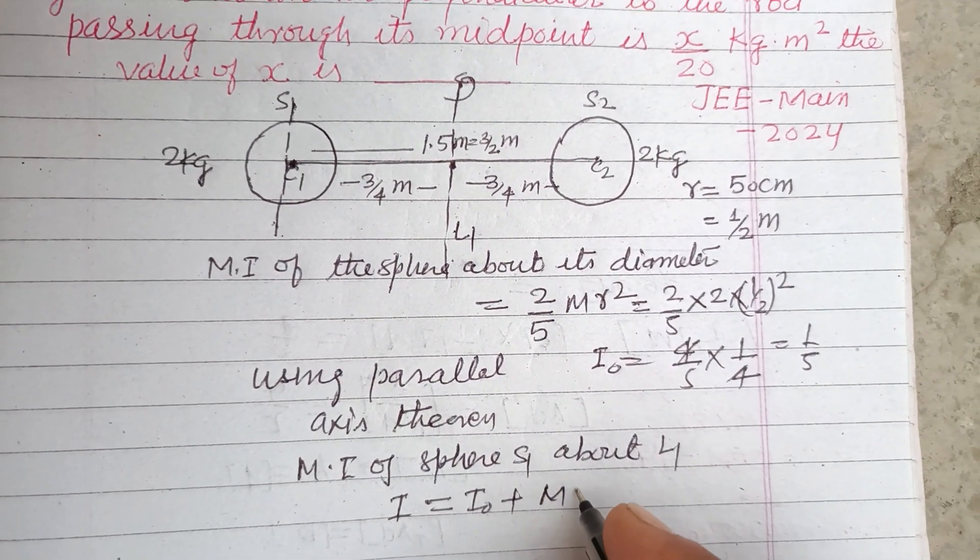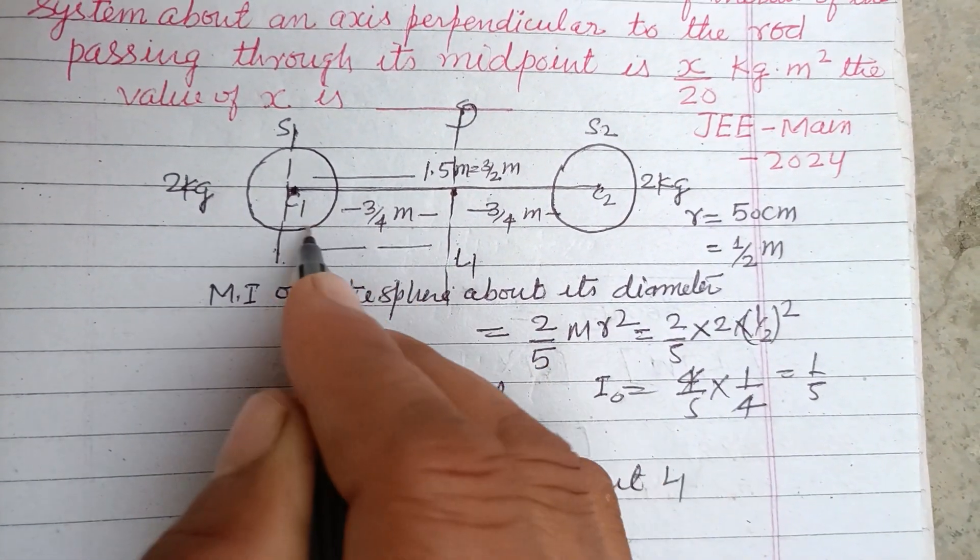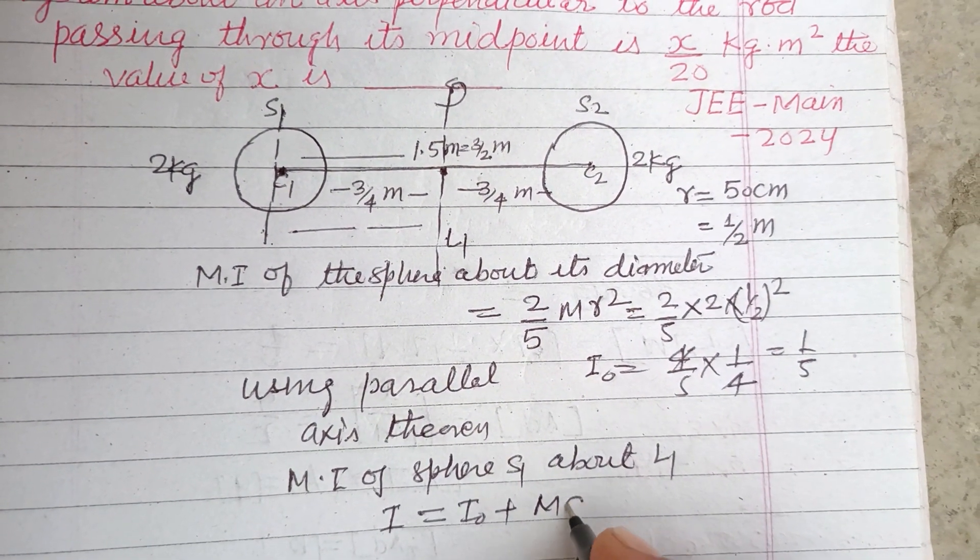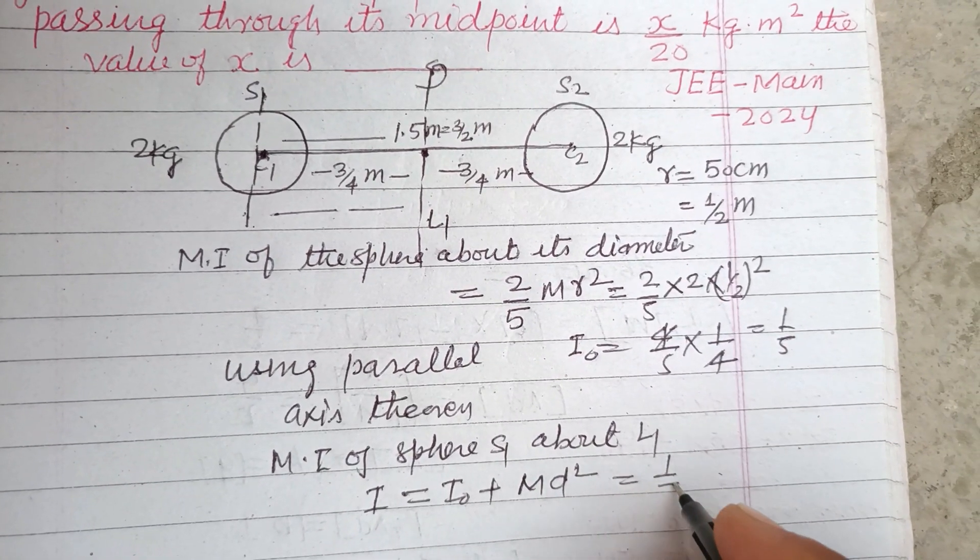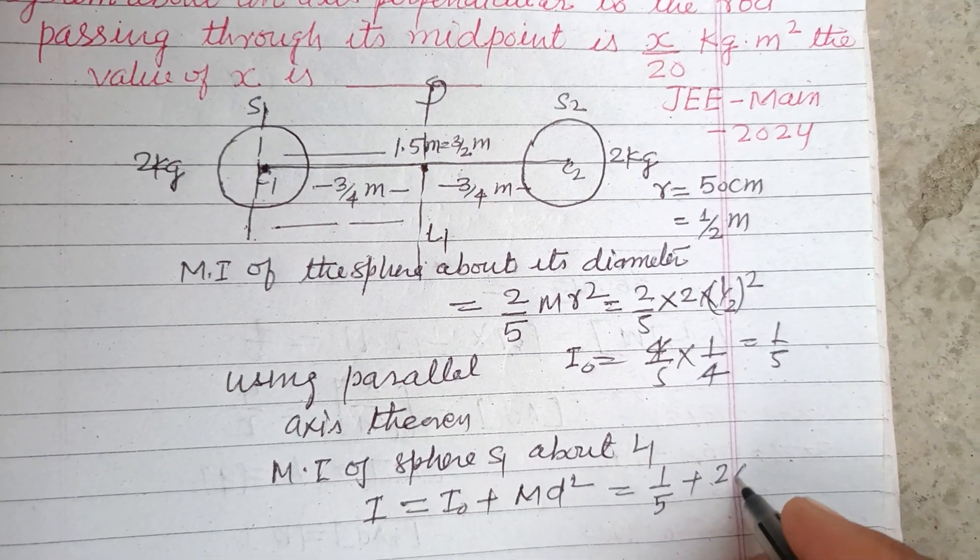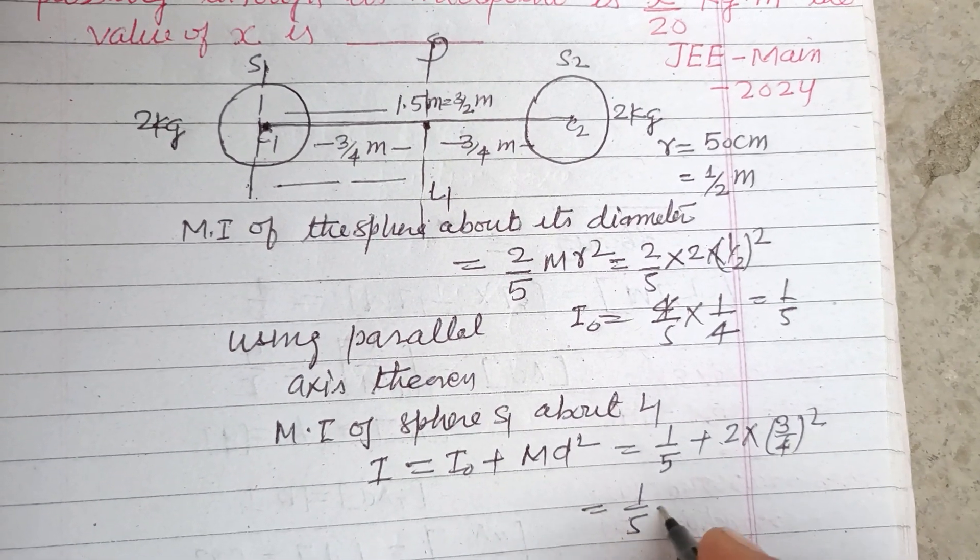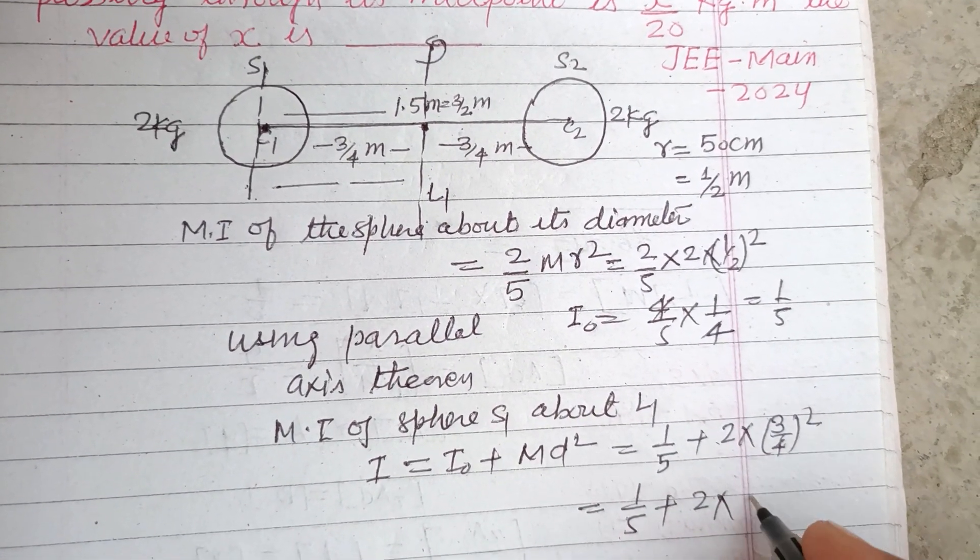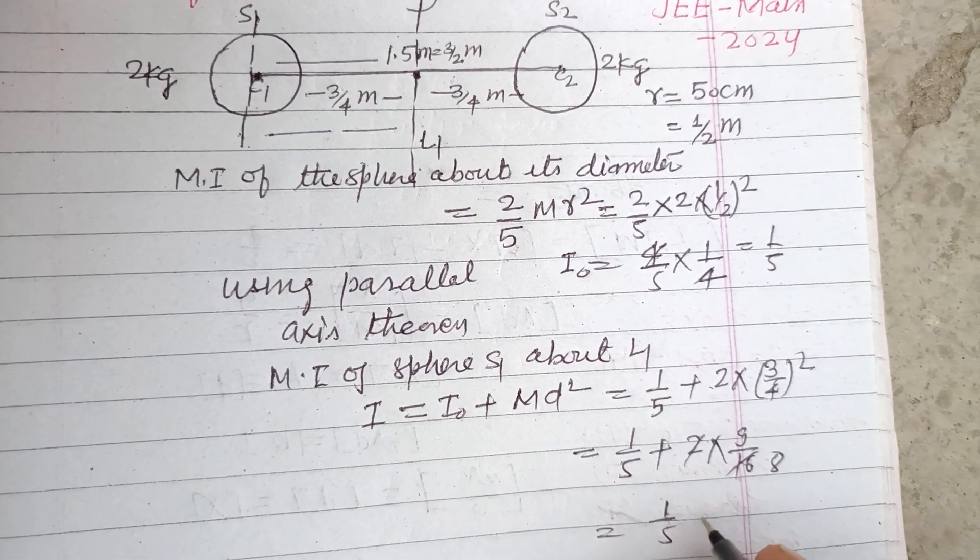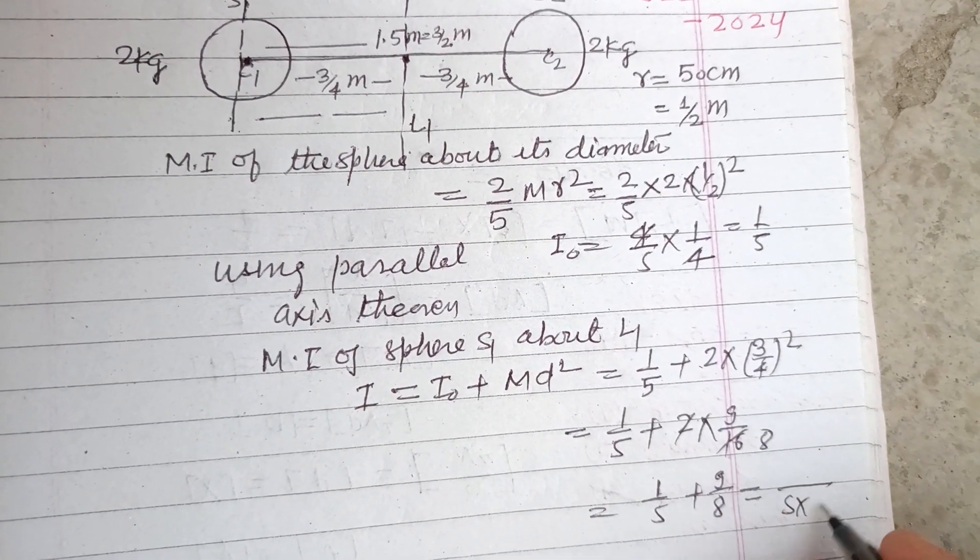MD², where D is the distance between the sphere and the line. So I₀ is initially obtained as 1/5, plus M is 2 and D is 3/4 whole squared. So this is 1/5 + 2 × 9/16, so this is 1/5 + 9/8.